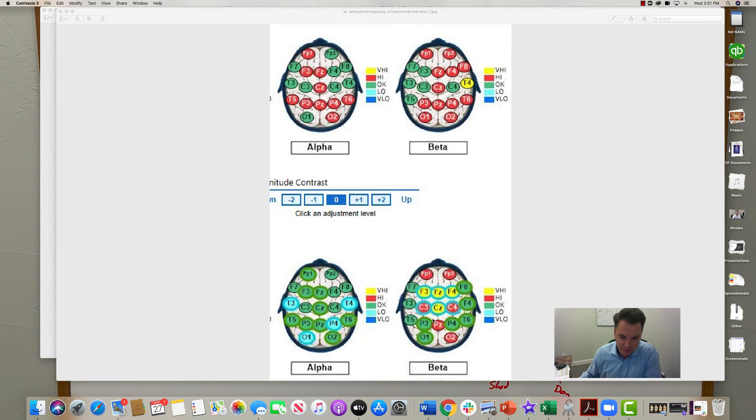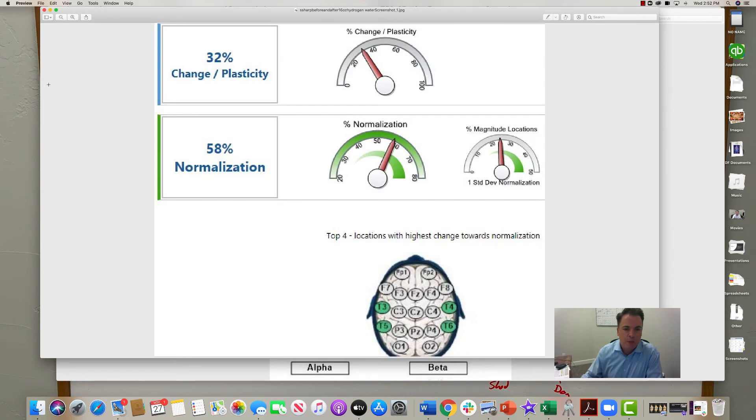If you go down to the after, look at the after. We have a whole bunch of these reds going to greens. Yeah, some of them drop down into blue, that does happen. Some of these reds went up, the betas went up into yellow. But overall, to get this kind of result—to get 58% of what we call normalization—